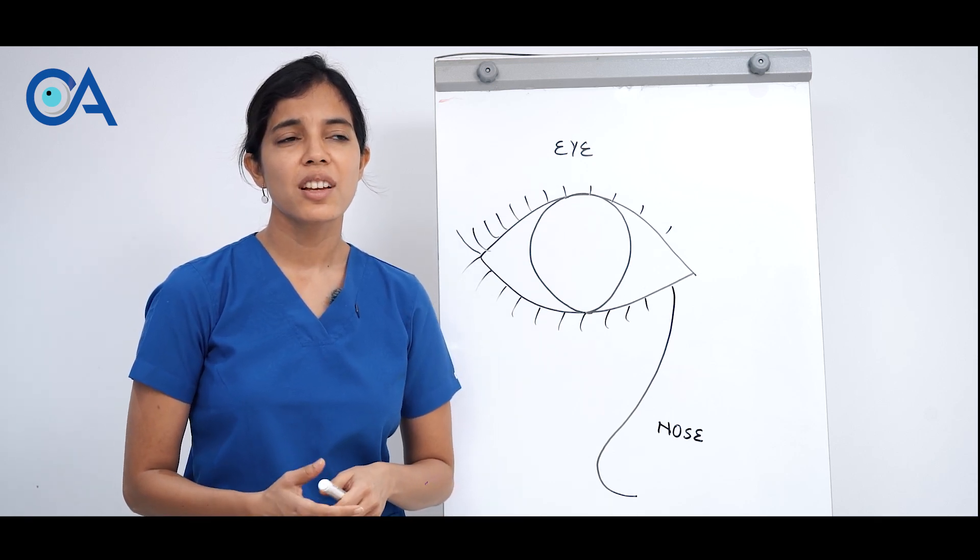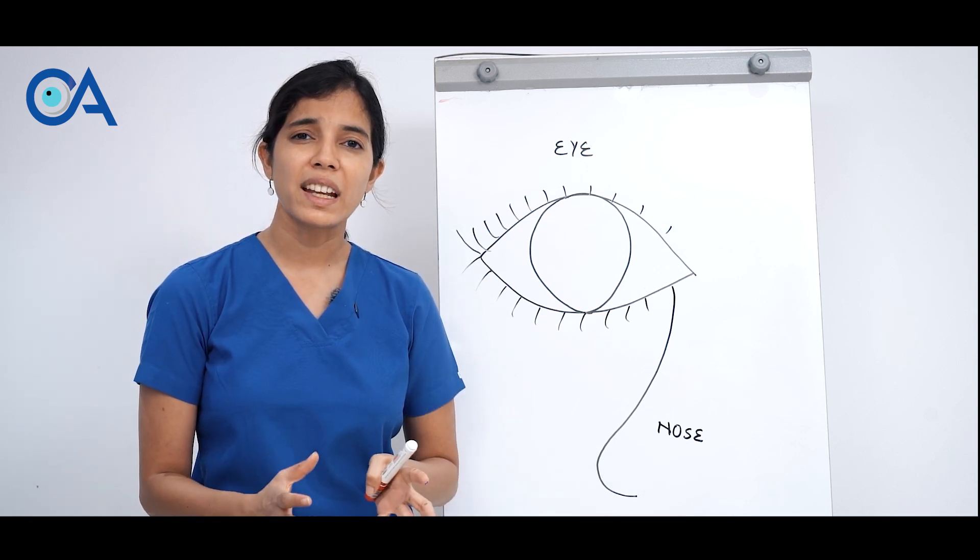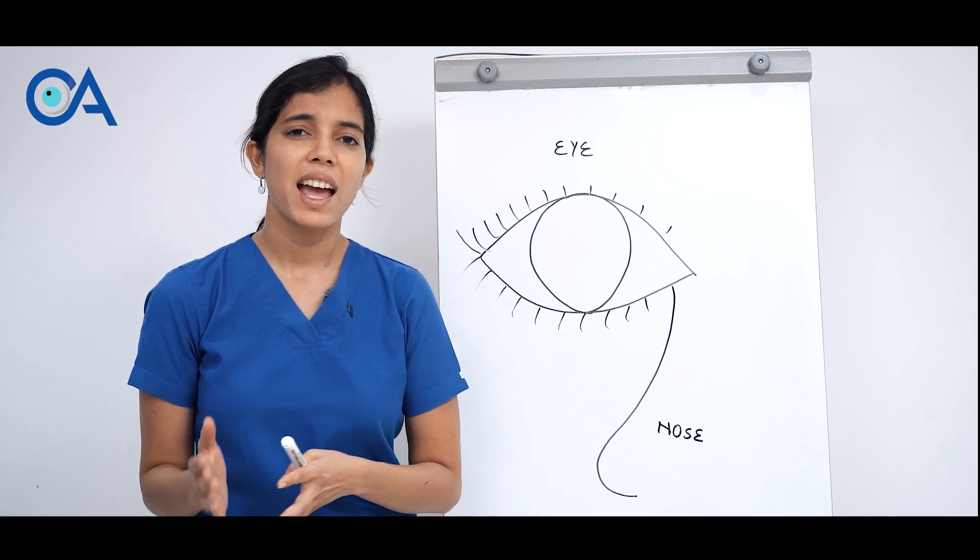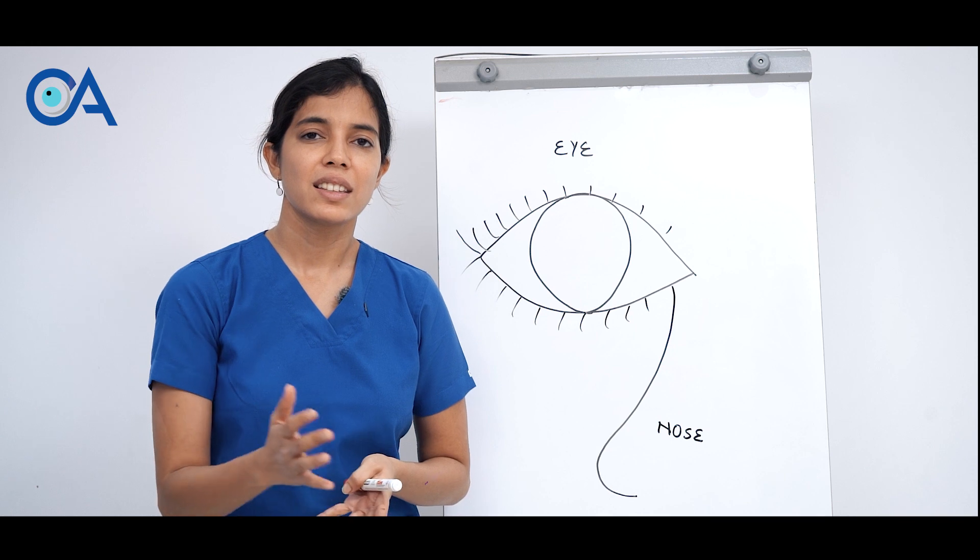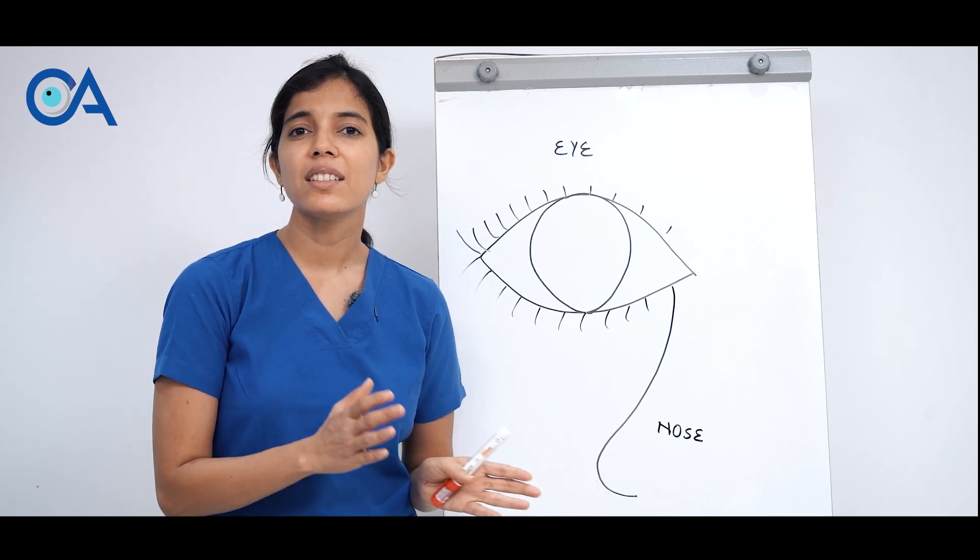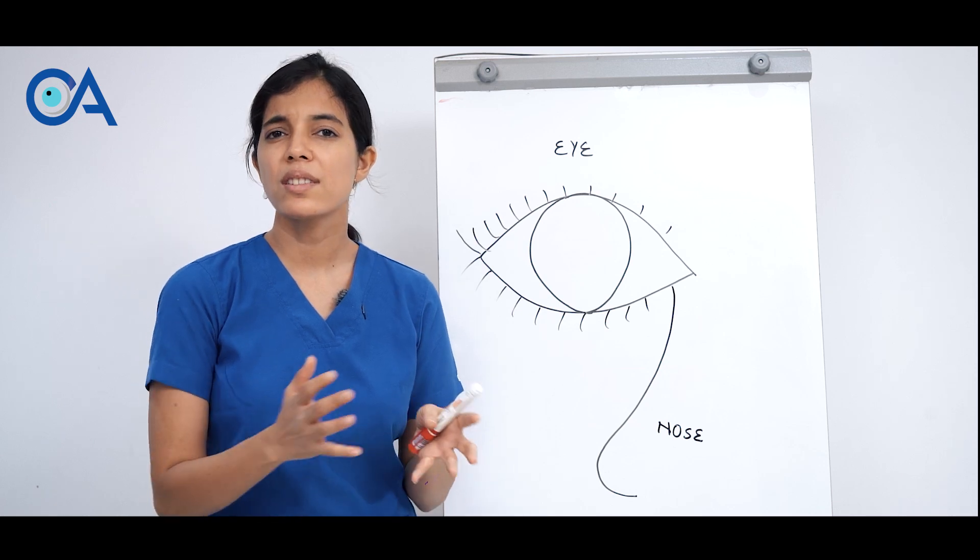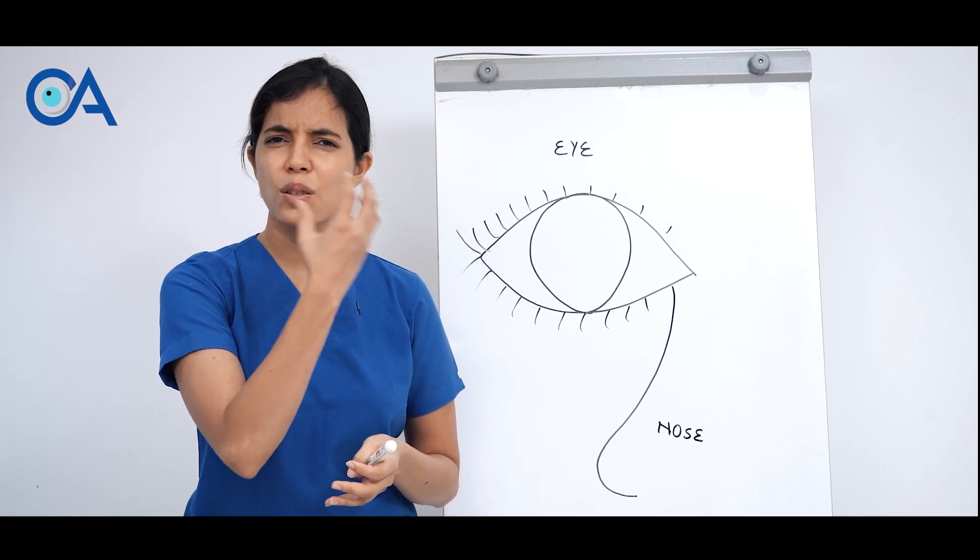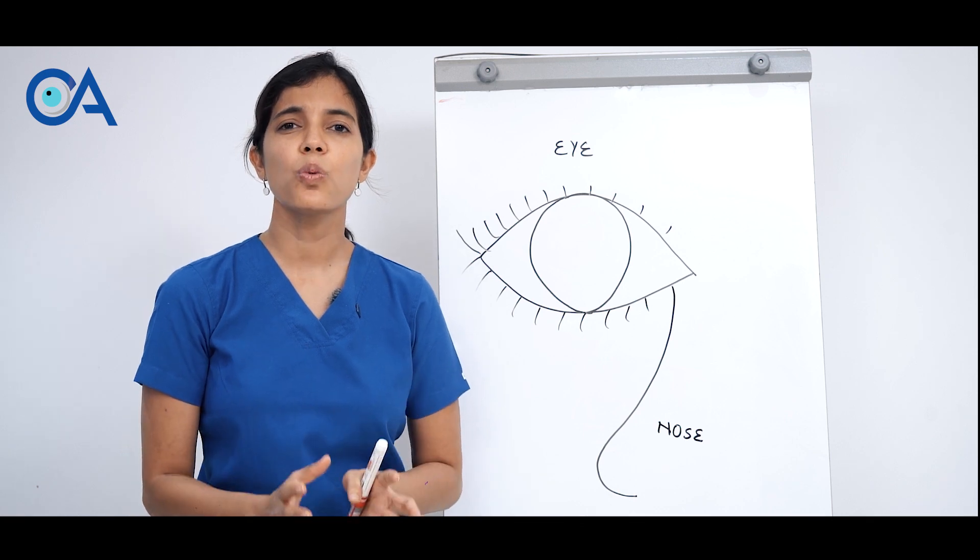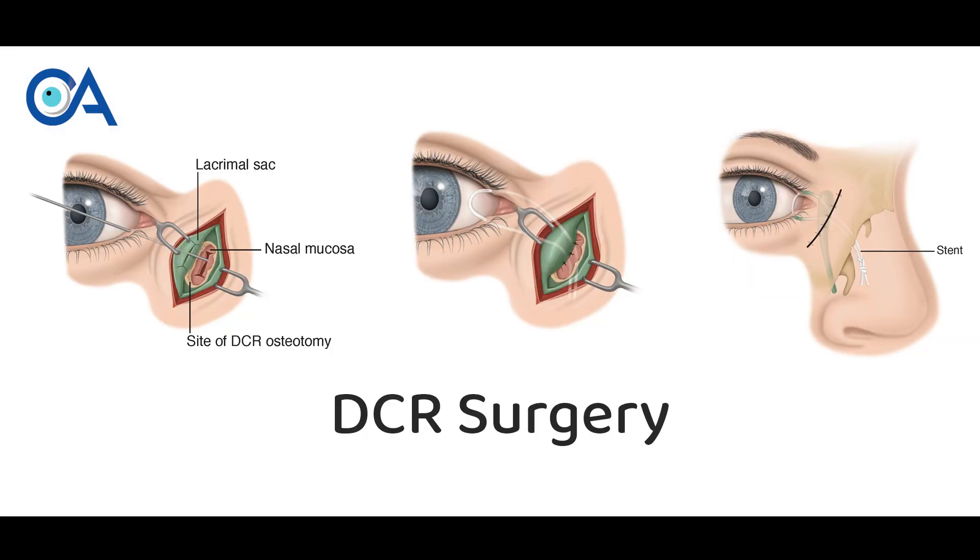Today we'll talk about persistent watering which is due to tear drainage pathway blockage and what is the surgery for it. The surgery is DCR. What is the reason for tear duct drainage pathway blockage? How does it occur? What is the exact thing going inside the eye and how do we treat it with the surgery DCR?